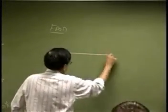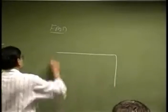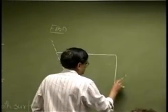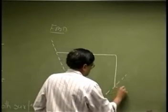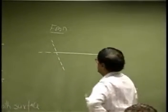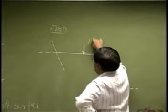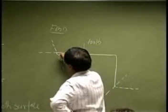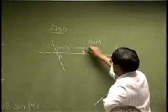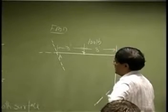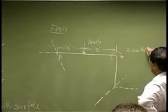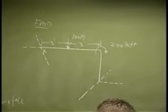For this problem, the free body diagram should look something like this. First, you have the applied force of 100 pounds. This point is A, and the distance here is 3 feet. Then you have another point where the distance is another 3 feet, and at this point there is an applied couple of 200 pound-feet. So those are the applied forces.